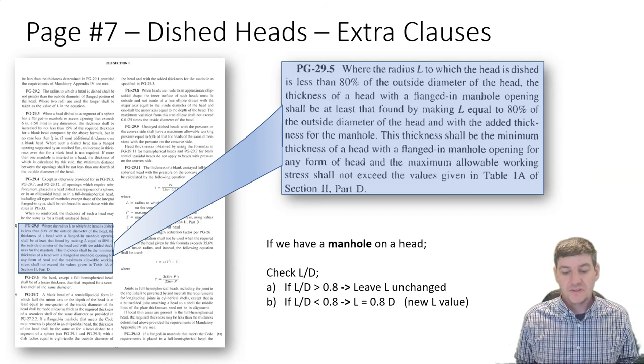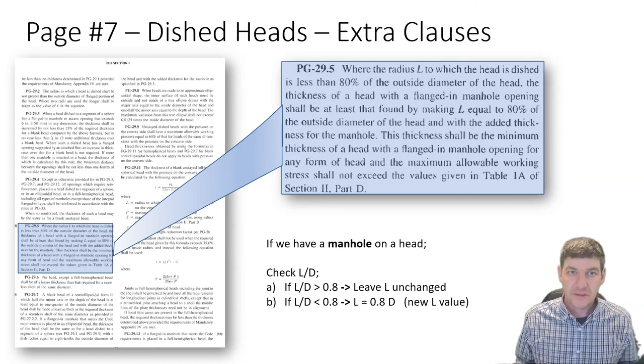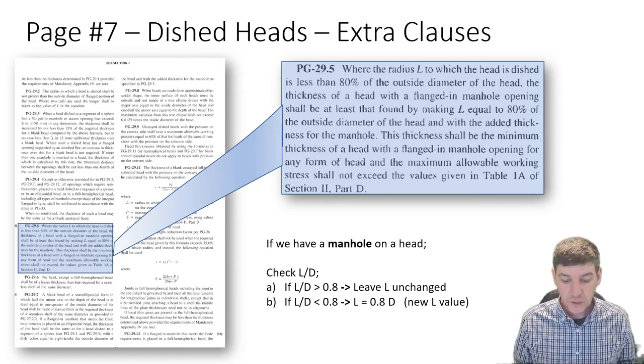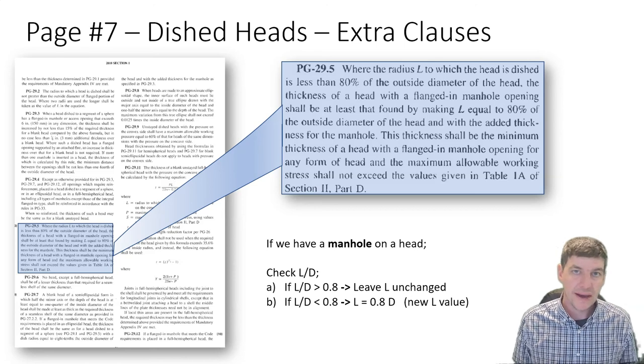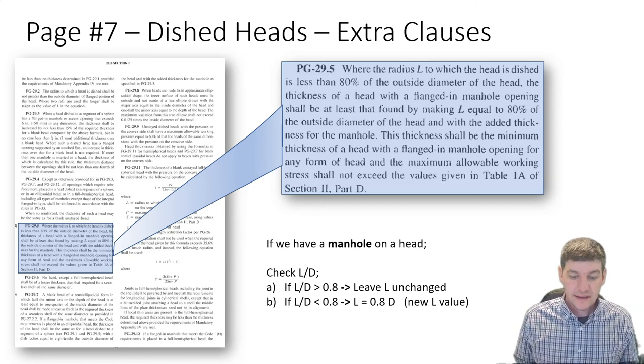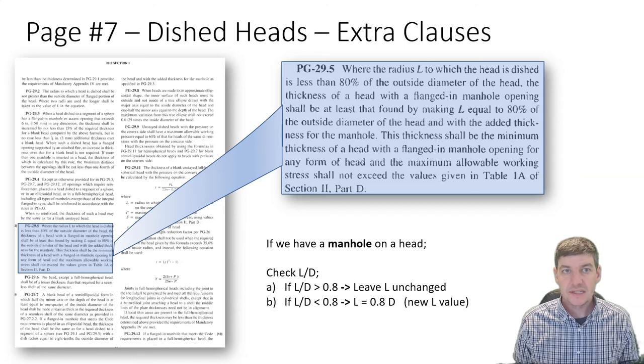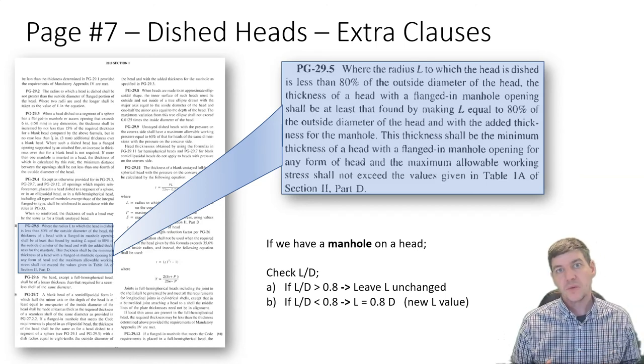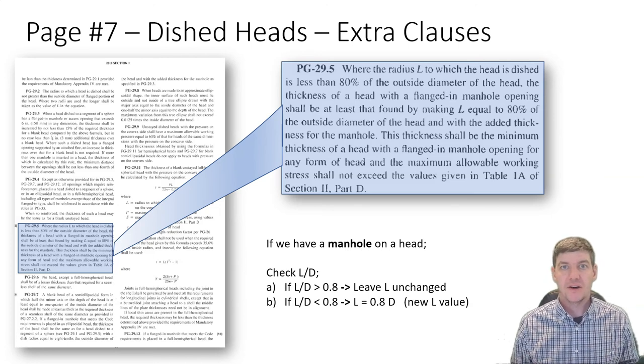If L divided by D is greater than or equal to 80% or 0.8, we're going to leave L unchanged - the L value we have is good. If that ratio L/D is less than 0.8, then we have to change our L value.